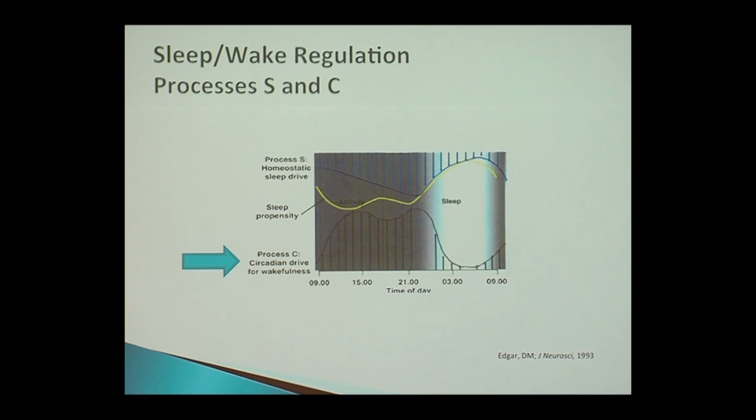Now, this also explains why if you pull an all-nighter, you get sleepier, sleepier, sleepier. So five in the morning, you could just collapse, but come eight or nine, you feel worse. You feel more tired, but you try to lie down and you can't sleep. That's this process. The gate is closed.